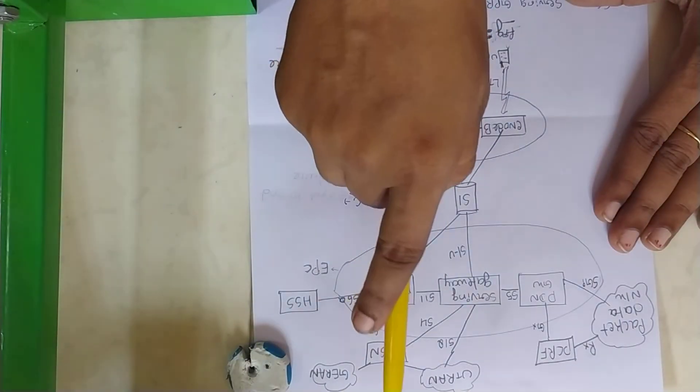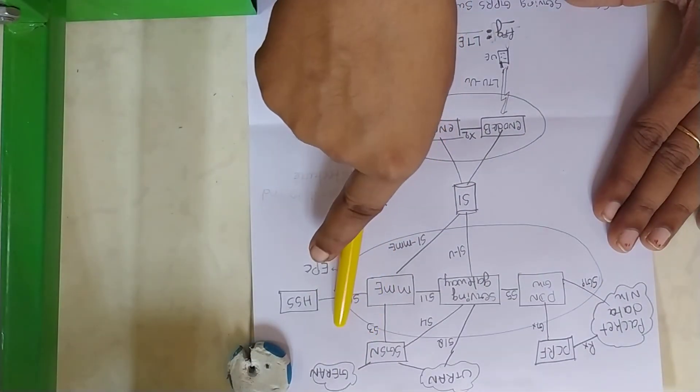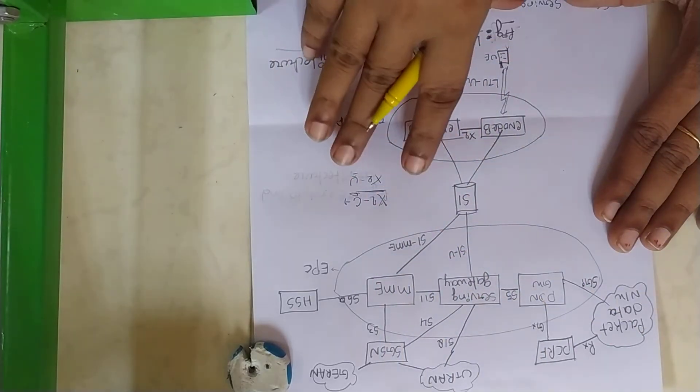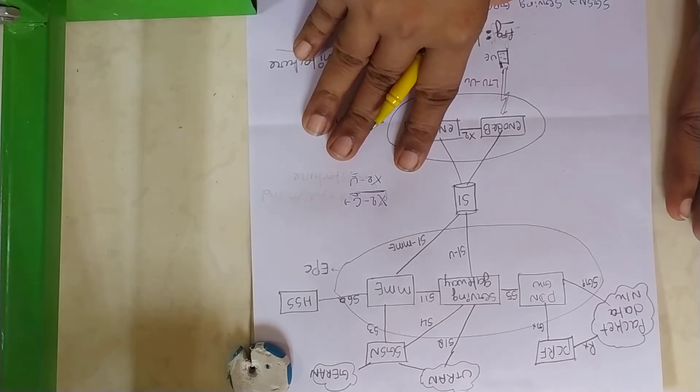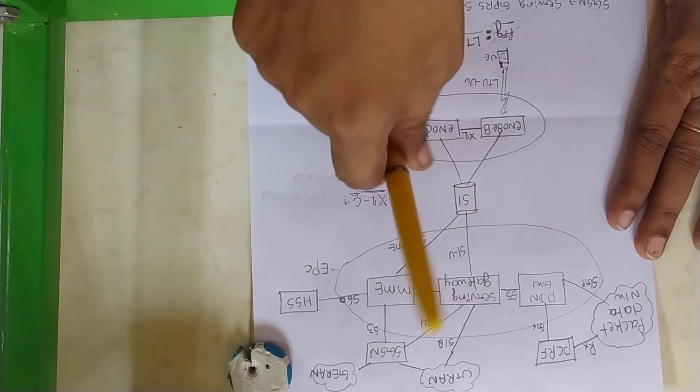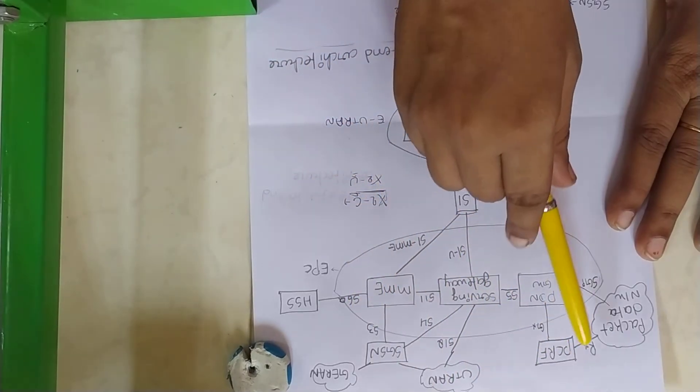SGSN is Serving GPRS Support Node. The functions of Serving GPRS Support Node include compression of data, authentication, and registration in the network.